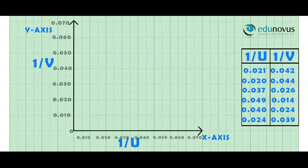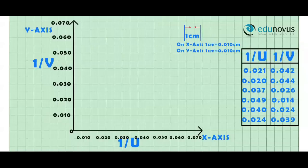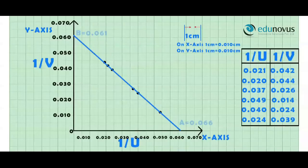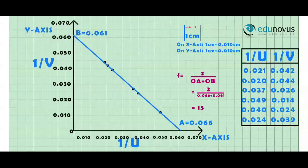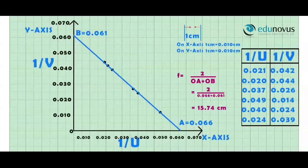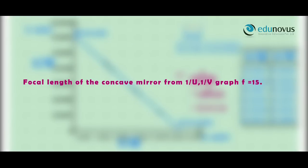We plot another graph — 1/U versus 1/V — with 1/U on the X-axis and 1/V on the Y-axis. The graph comes out to be a straight line cutting the axes at A and B. Therefore, F = 2 / (OA + OB) = 2 / (0.066 + 0.061) = 15.74 centimeters. The focal length of the concave mirror from the 1/U versus 1/V graph is 15.74 centimeters.